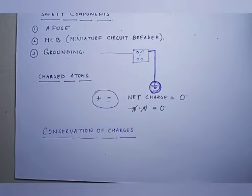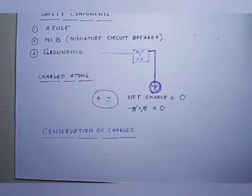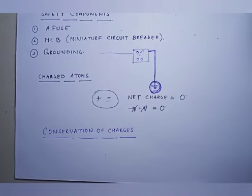Electrons spin outside the nucleus and can sometimes break free from atoms. When an atom loses an electron, it becomes positively charged because it now has more protons than electrons. The electrons that leave one atom join another atom, and an atom that gains an electron becomes negatively charged. An object is said to be electrically charged when the number of protons and electrons is not equal. I hope all the topics are very much clear to everyone. Next time we meet, I will start with a very new topic. Till then, be safe and goodbye everyone.